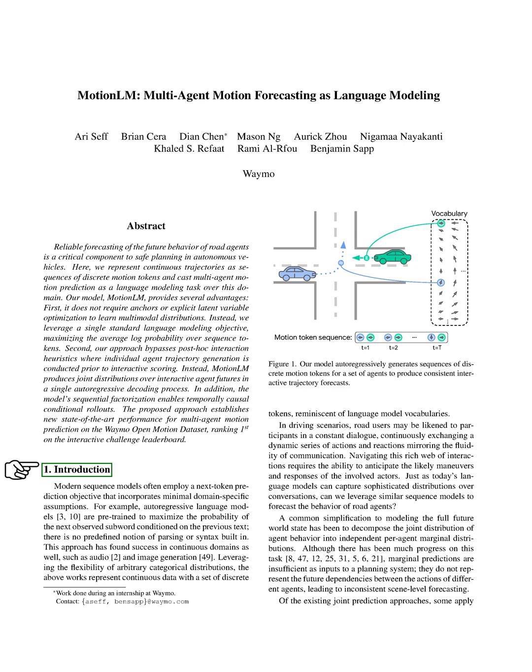Section 1 Introduction. In this introduction, we discuss the use of modern sequence models in predicting the next token in a sequence, which is a method that doesn't rely on any specific domain knowledge. For instance, autoregressive language models are trained to predict the next subword based on the preceding text, without any preconceived understanding of parsing or syntax. This method has also been successful in continuous domains like audio and image generation.